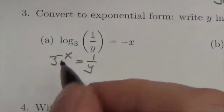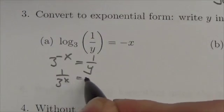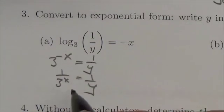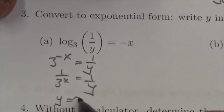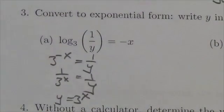So what I might do here is understand this as 1 over 3 to the x equals 1 over y. If I multiply up by the y and multiply by the 3 to the x, I'll get that y equals 3 to the x. And that's what the question is asking me to do.